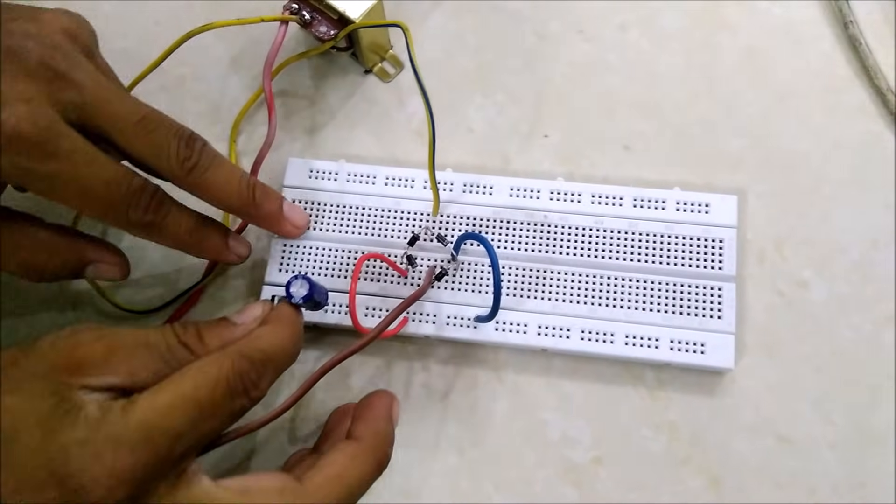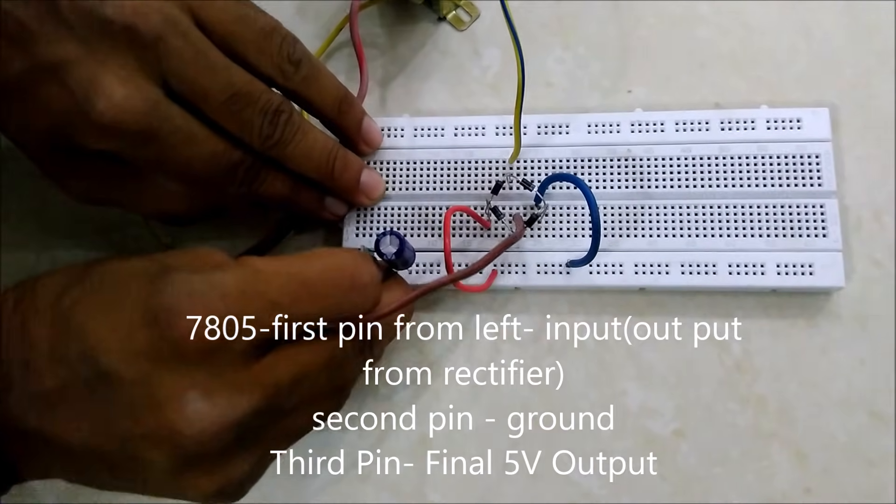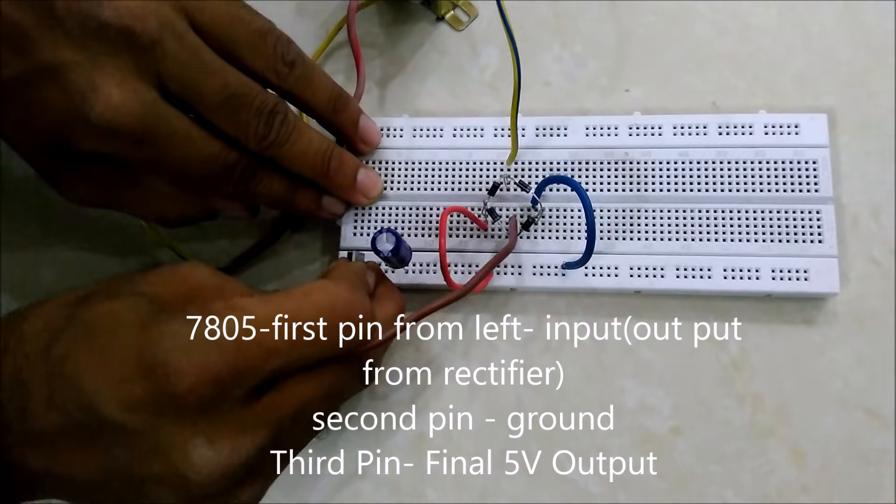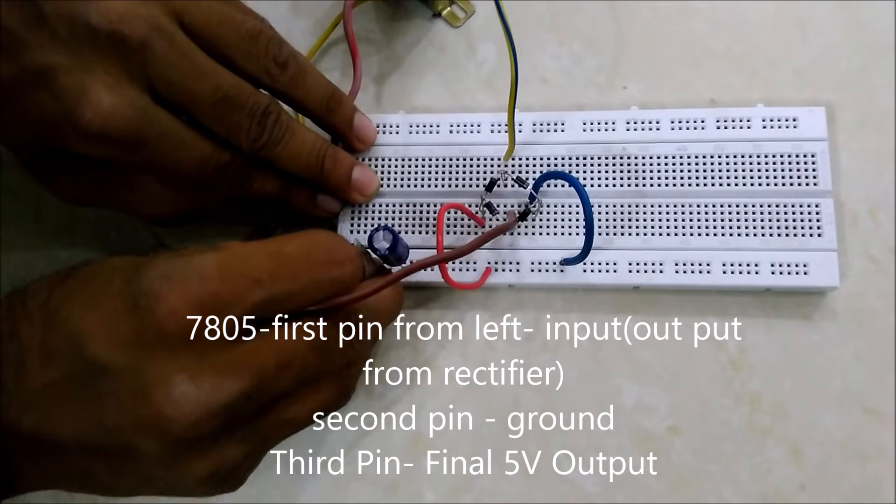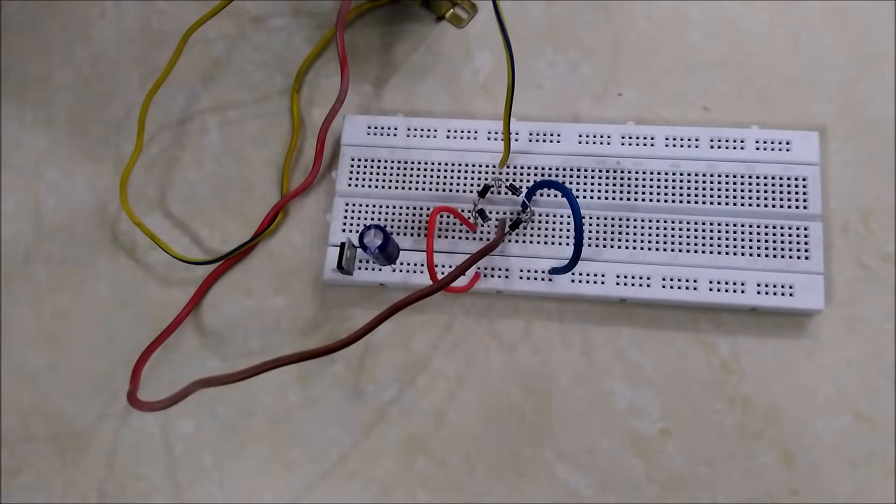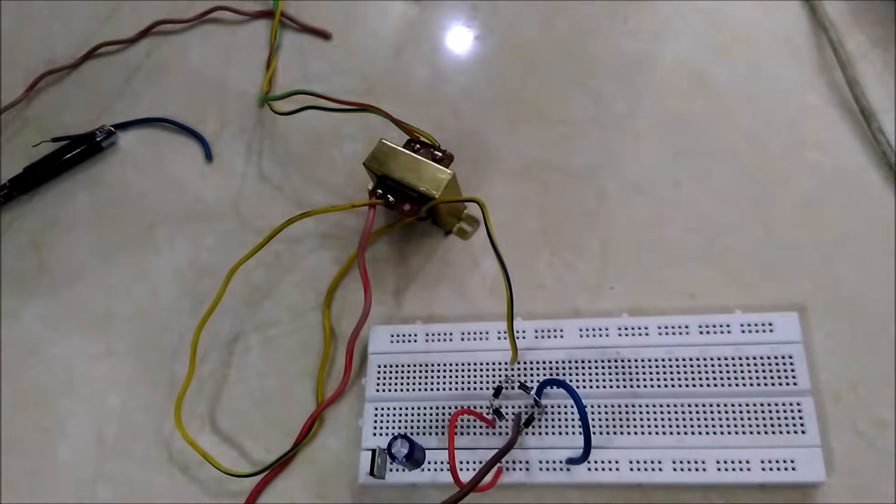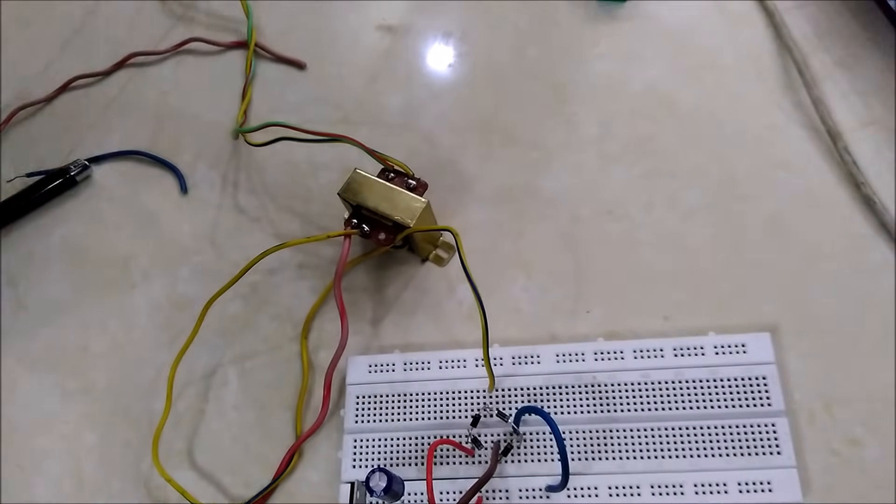Now we'll connect the 7805 IC. The input of the transformer will go into the output wire to the main power supply.